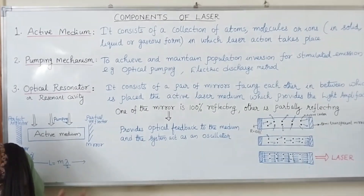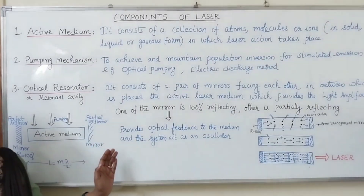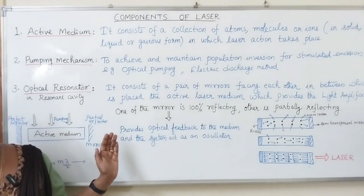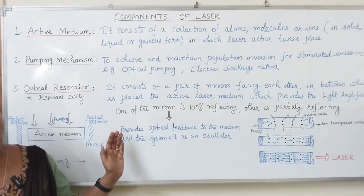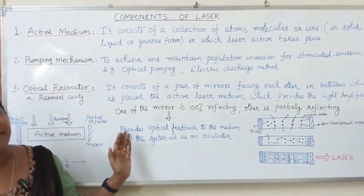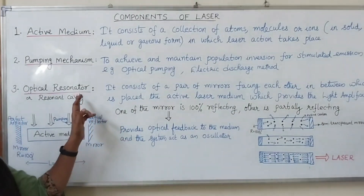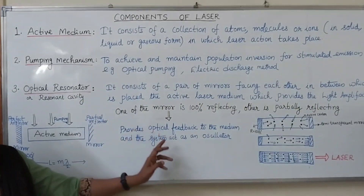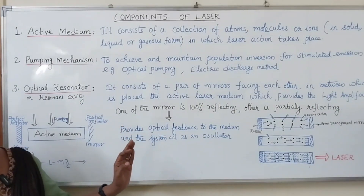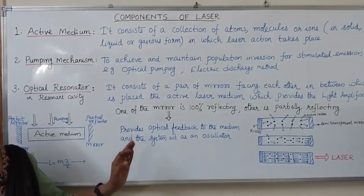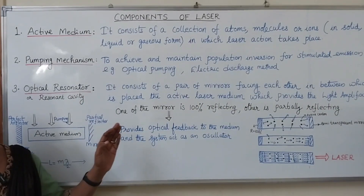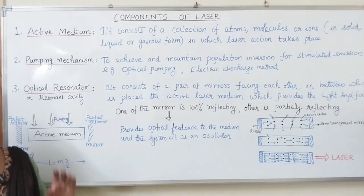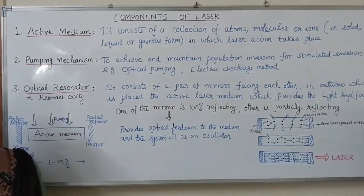At the output we finally get a highly intensified coherent beam. The optical resonator provides optical feedback in the system so that it acts as an oscillator in addition to providing amplification.